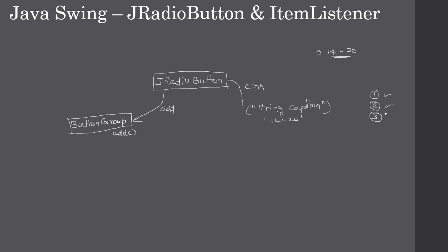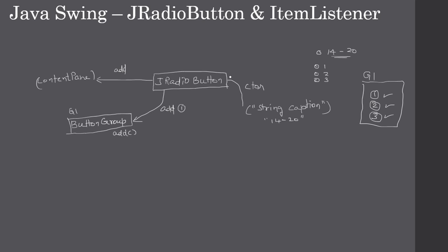We add three radio buttons to one group, say G1, and all three become part of that group. They appear as radio buttons with captions 1, 2, and 3. Since we know the property of radio buttons, you can select only one within a group — if one is selected, the other two become unselected. First we add each radio button to the ButtonGroup, then we also add them to the content pane so they get displayed in the container.